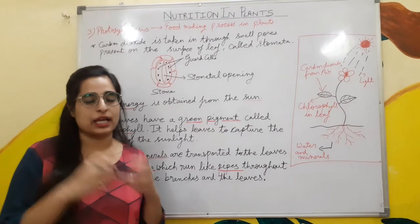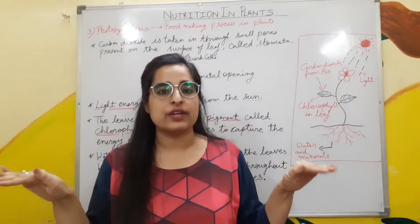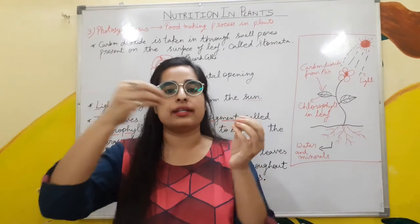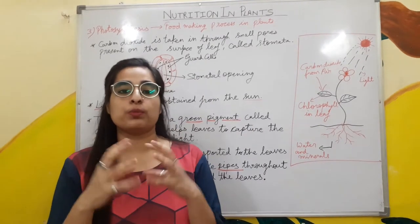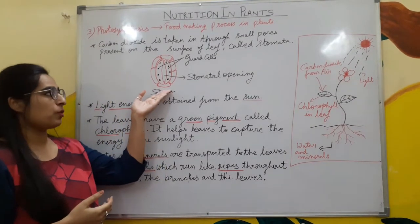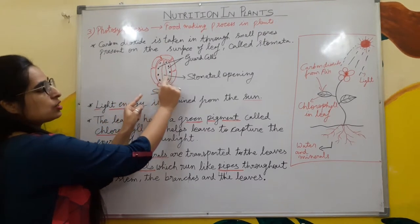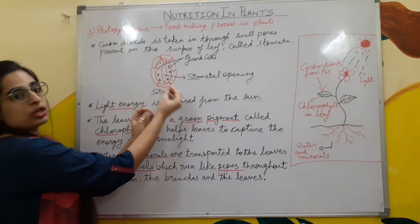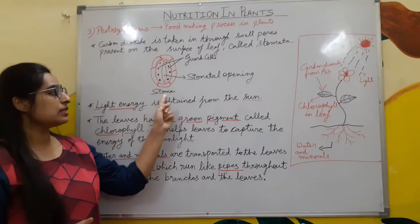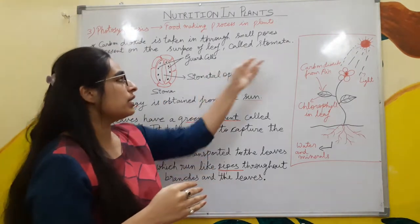First we will discuss carbon dioxide. There are small pores present on the surface of the leaf, and through these pores carbon dioxide from air enters into the leaf. These small pores are known as stomata. I have drawn the diagram of stomata here. These are the guard cells and this is the stomatal opening through which carbon dioxide enters. Here I have written 'stoma' — it is singular. When we talk about many stoma, we write the word 'stomata'.